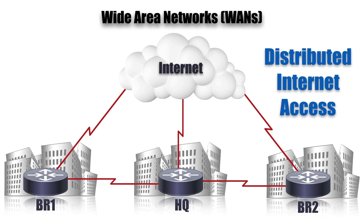In distributed internet access, each site can independently send and receive traffic to and from the internet. This saves on WAN bandwidth between sites and HQ. However, there's more expense for additional internet connections and the extra administration and maintenance they require.